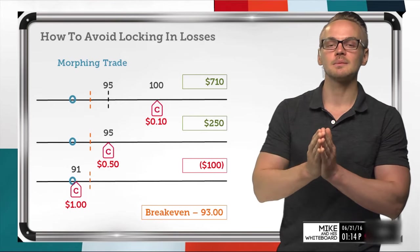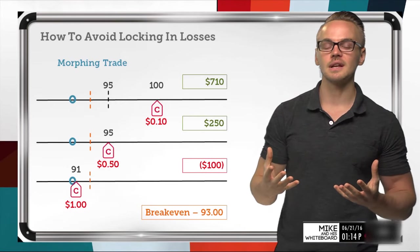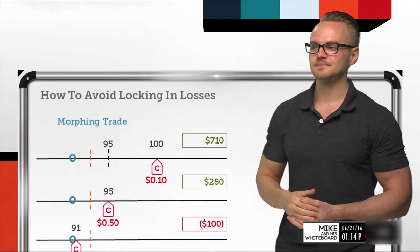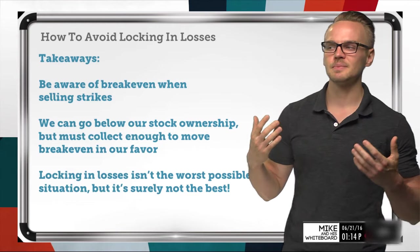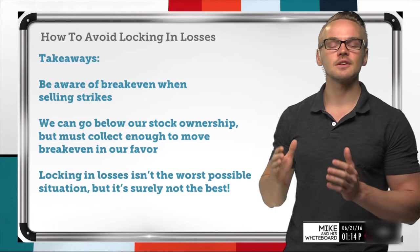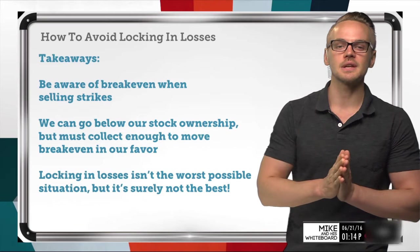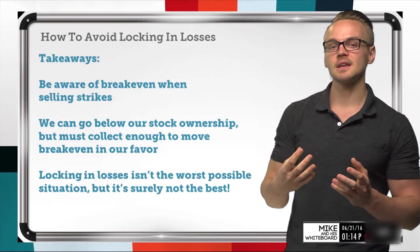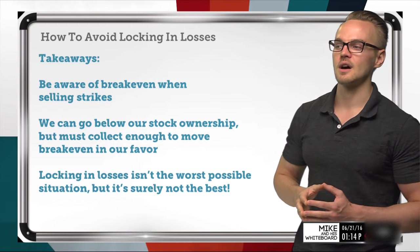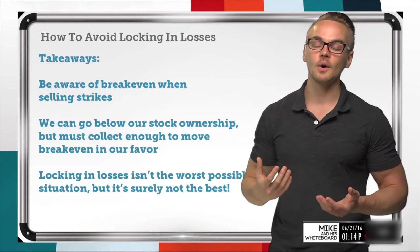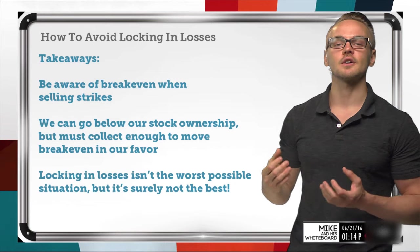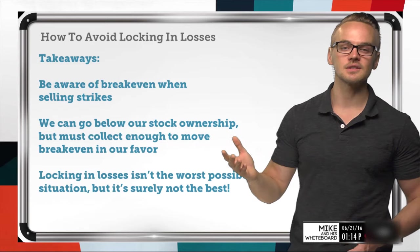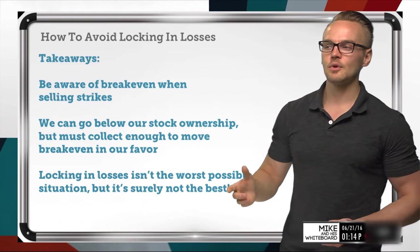It's critical to know where our break-even is when analyzing cost basis reduction. If we go further down from our break-even and don't collect enough credit to move the break-even below our strike, we lock in a loss. If I had been able to collect $5 for that call, the break-even would move down drastically and I'd be profitable. So always keep an eye on the break-even when creating these strategies.